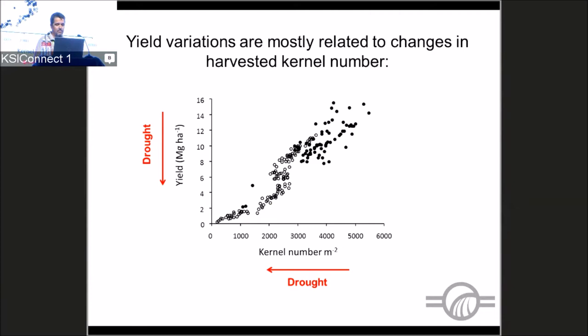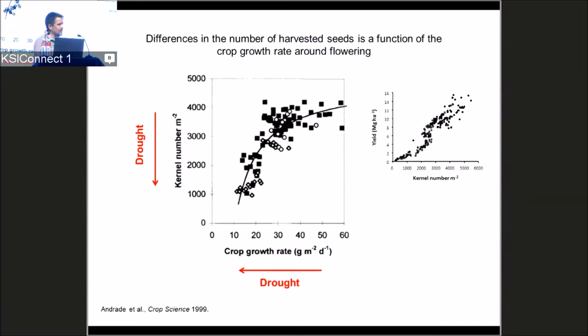For about 20 years we've known that the number of kernels harvested is very related to how much the plants are growing around flowering. If you check most agronomic practices, they are always trying to increase crop growth around flowering to maximize kernel number and yield at the end of the season.